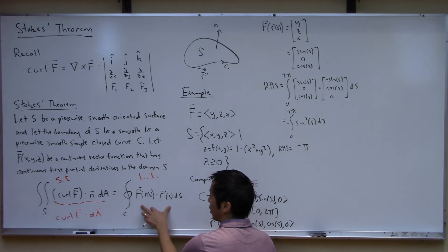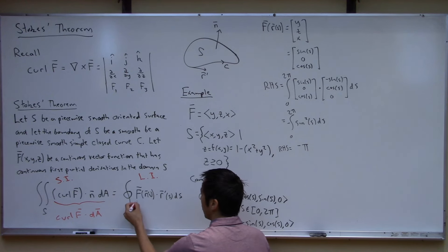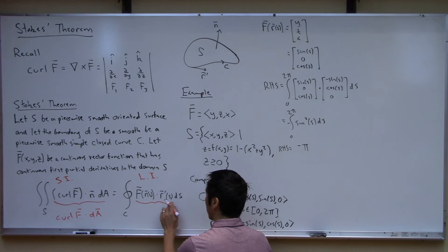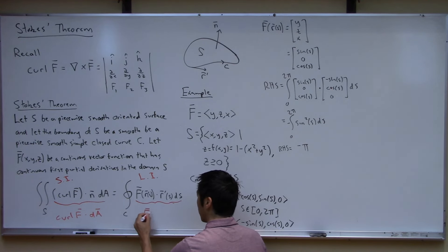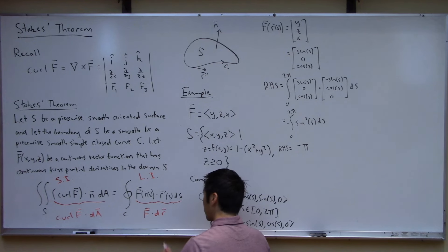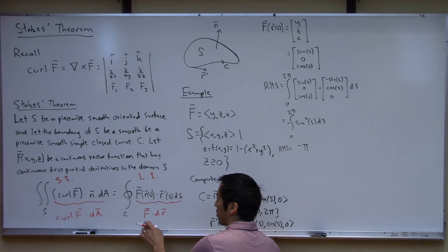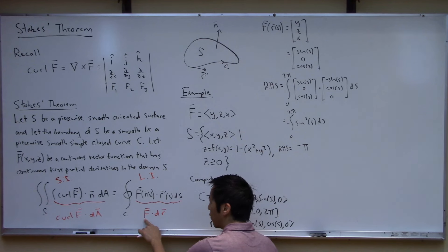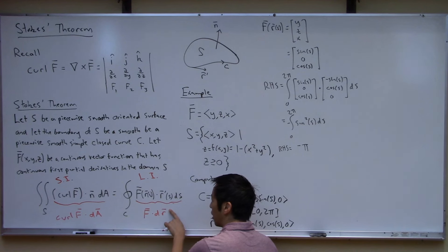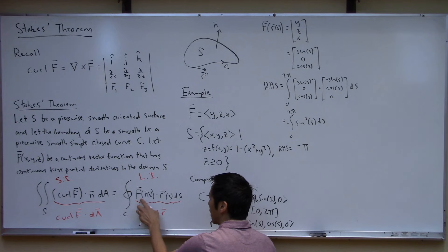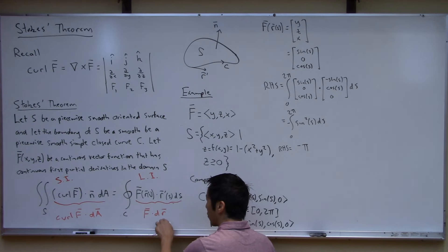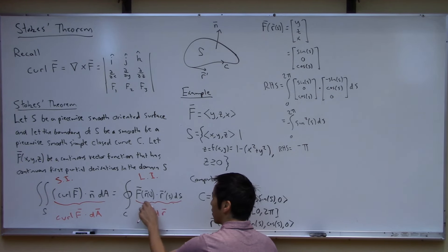Similarly, on the line integral side, sometimes you may see an abbreviation where people write this as F dotted with dR. It's the same thing — you're integrating the vector function F around the line C. In our discussion of line integrals, we said that when someone writes F·dR, what we really mean is this more explicit formulation.